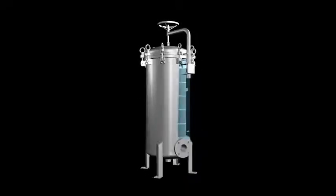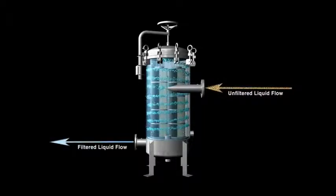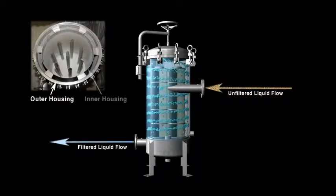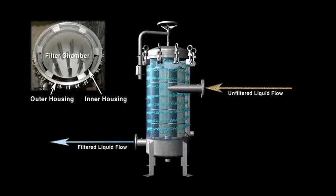Here is how the Hurricane filter works. The liquid flows into the housing through a tangential entry and is channeled between the outer housing and the inner housing wall. The inner wall rises from the base to just below the top of the housing, so that liquid must flow around and then over the inner wall before entering the cartridge filtration area.